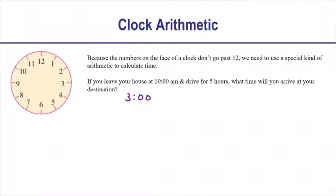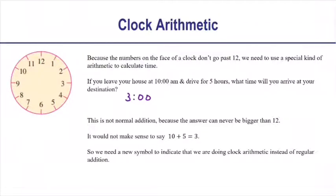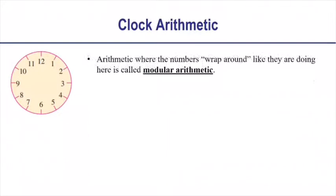I'm just going to say 3 o'clock. Now, this is not normal addition because the answer can never be bigger than 12. It wouldn't make sense to say 10 plus 5 equals 3 using a regular equals sign — 10 plus 5 has to be 15, period. So we need a new symbol to show that we're doing clock arithmetic instead of regular addition. The symbol we're going to use is a plus symbol with a circle around it. This kind of arithmetic where numbers wrap around is called modular arithmetic.